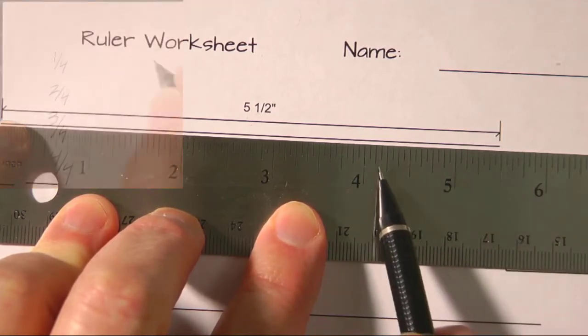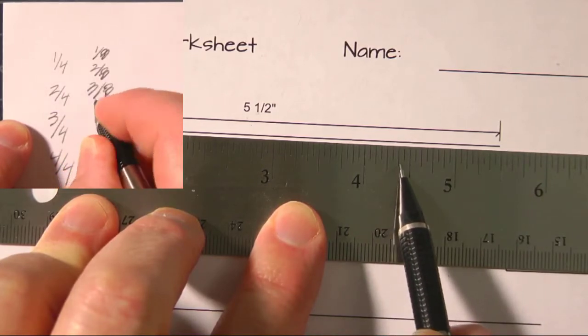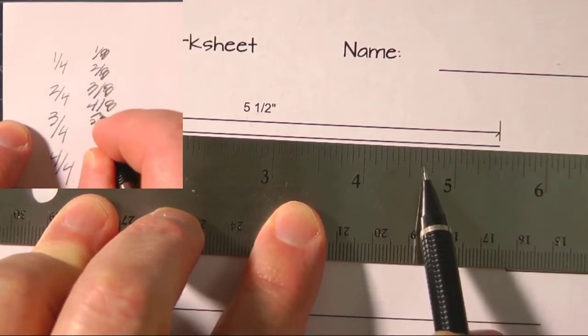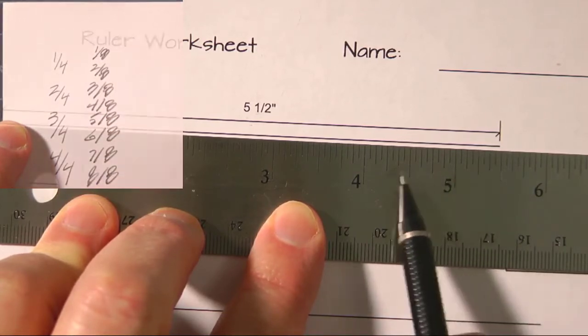We also have eighths, so we have four and one eighth, that would be two eighths, there's three, four eighths, five eighths, sixth eighths, seventh eighths, and eight eighths. So there are all of them.